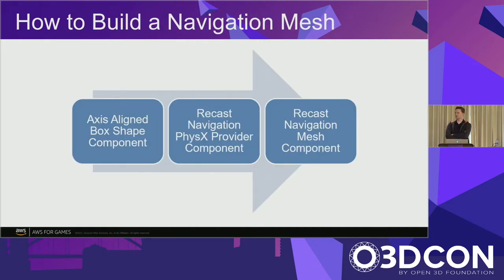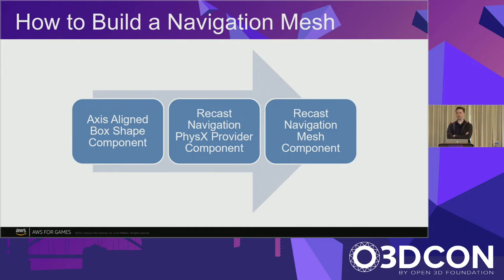To summarize visually: there are three components. The first is an axis-aligned box — an existing component used to define the area, since Recast only supports a rectangular box-like area in the world. That tells the provider component where to look for geometry. The provider component queries the physics geometry, which finally feeds into the component that does the real work of computing all the navigation data.